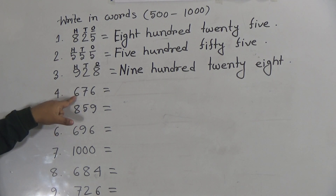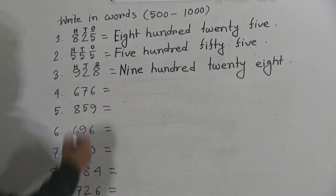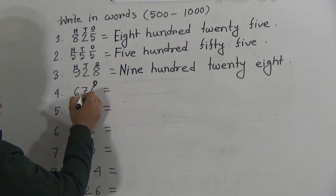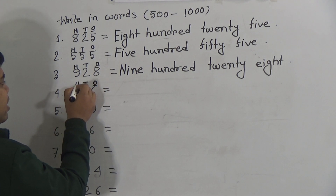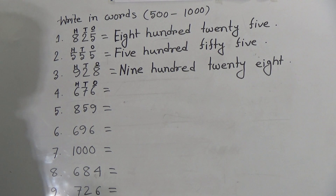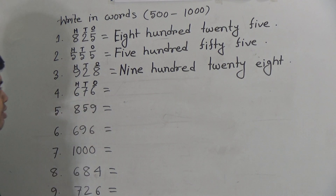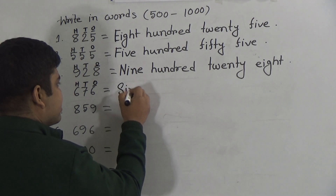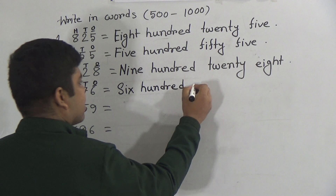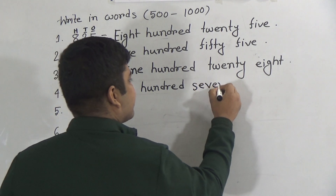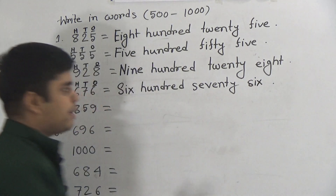Similar way, we write the fourth one: 6, 7, 6. Here 6 is in the 1's place, 7 is in the 10's place, and 6 is in the 100's place. So we read this number as 676. Write: six hundred seventy six.